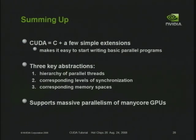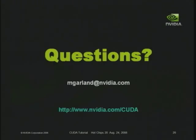To sum up the key things to remember about CUDA: it is just C with a couple of little extensions to express the parallelism of the computation. Those extensions fall into the three categories of basic abstractions CUDA provides: the hierarchy of parallel threads, corresponding hierarchies of memory, and synchronization primitives. Because it guides you to create programs with a high degree of fine-grained data parallelism, it supports the kind of massive parallelism present in many-core GPUs.